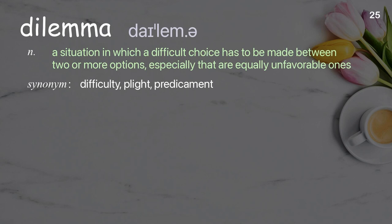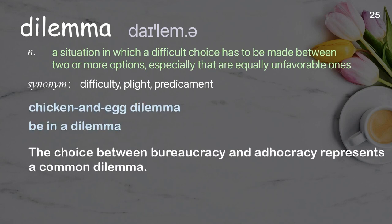Dilemma: a situation in which a difficult choice has to be made between two or more options, especially ones that are equally unfavorable. Examples: chicken and egg dilemma; be in a dilemma. The choice between bureaucracy and adhocracy represents a common dilemma.